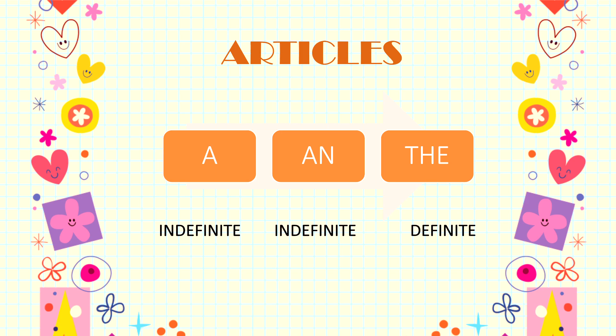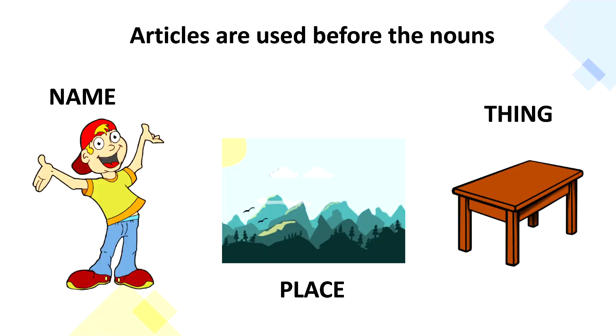Here 'a' and 'an' are called indefinite articles, and only 'the' is termed as a definite article. Usually articles are used before the nouns. Nouns basically describe a name, place, animal, or thing. Usually before this, 'a' can be used, or 'an' can be used, or 'the' can be used.